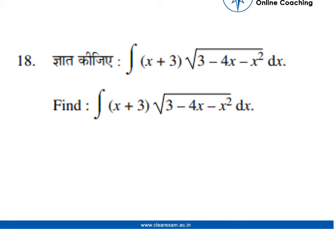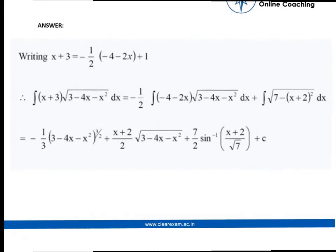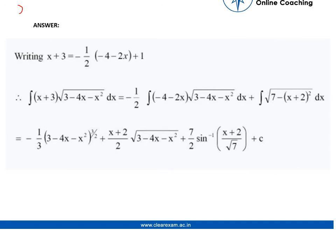So, the question is, find integral of x plus 3 into under root of 3 minus 4x minus x square into dx. The initial equation we asked was x plus 3 under root 3 minus 4x minus x square dx.